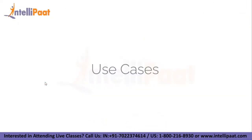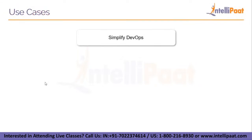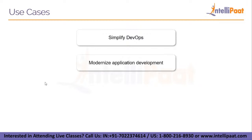Moving on to the use cases of EFS: it can be used to simplify DevOps by sharing code and other files in a secure, organized way to increase DevOps agility and respond faster to customer feedback. It can also modernize application development — you can persist and share data from your AWS containers and serverless applications with zero management required, so AWS EFS manages all your app development stages and you can concentrate only on the code.